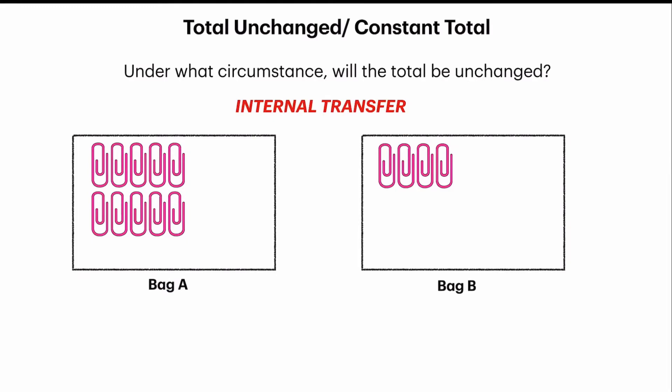Let me write it down. So, an internal transfer happens when you move paperclips from one bag to the other. In this case, from bag A to bag B, or from bag B to bag A. Now, let's try it out.